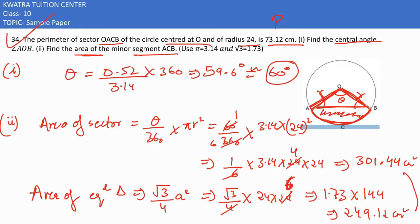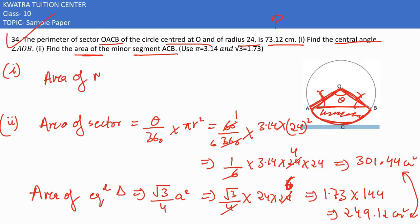Now subtract both values to get area of minor segment. In this case, area of minor segment would be equal to 301.44 minus 249.12, which gives you 52.32 cm squared.